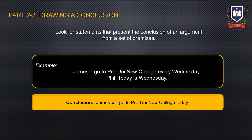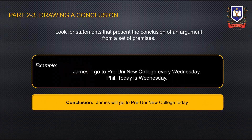After breaking down each word, we come to understand that essentially we are finding clues in the information to further make meaning of the text. Drawing a conclusion questions present a number of premises then require students to determine the best conclusion that can be made from these premises. For example, James says 'I go to Pre-Uni every Wednesday,' and Phil replies 'today is Wednesday.' The conclusion that can be deduced is James will go to Pre-Uni New College today.